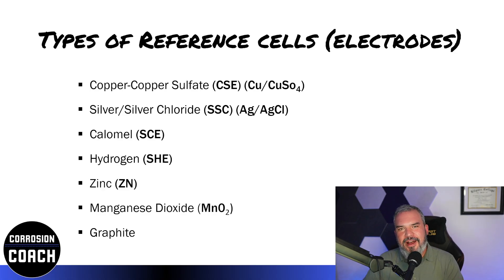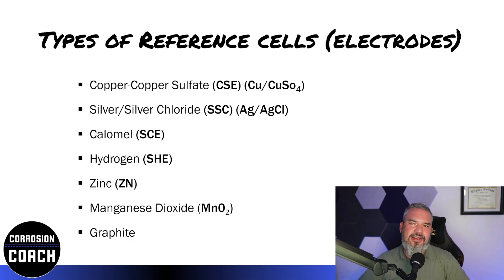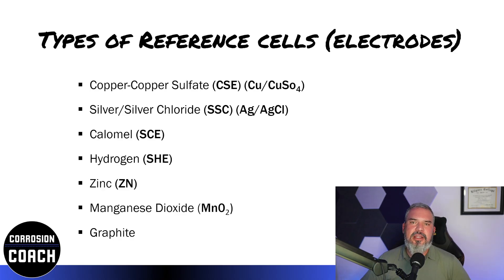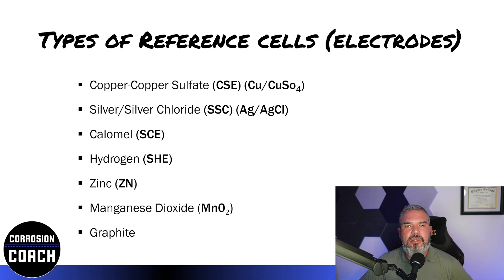The one at the top is the one we use most out in the field. If you're on land, that's probably what you're using — a copper-copper sulfate reference electrode, or CSE. It's very commonly used on land. However, we can't use it in certain applications — for example, in seawater. That high chloride content can penetrate the porous tip of our electrode, contaminate it, and make your readings inaccurate. So we can't use it in saltwater environments.